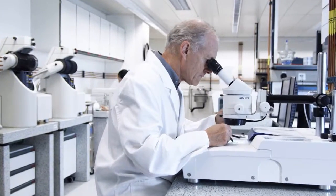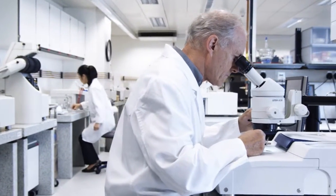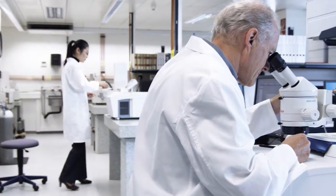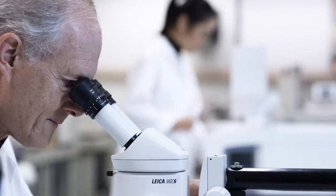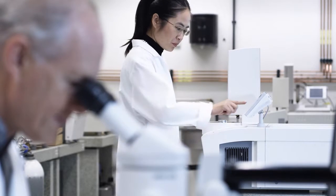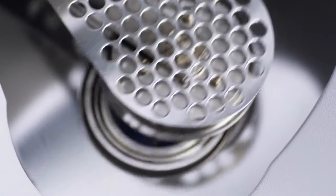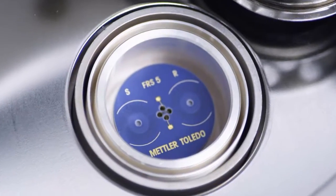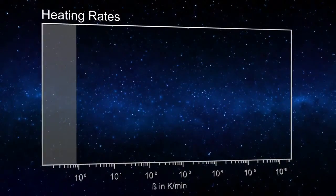Differential Scanning Calorimetry, or DSC for short, is a technique that allows you to determine the energy absorbed or released by a sample over a wide temperature range. The standard DSC-1 from Mettler Toledo has a maximum heating rate of 400 Kelvin per minute.